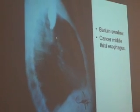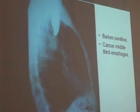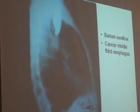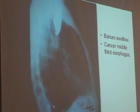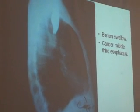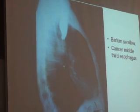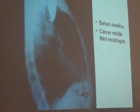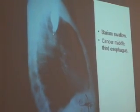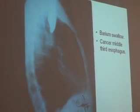The X-ray findings suggesting cancer esophagus: number one, there is shouldering and complete occlusion of the esophagus for a long segment. Number three, shouldering on both sides, irregularity and complete occlusion for a long segment extending to the upper third of the esophagus, denoting possible cancer esophagus. Other investigations needed: upper GI endoscopy and biopsy.